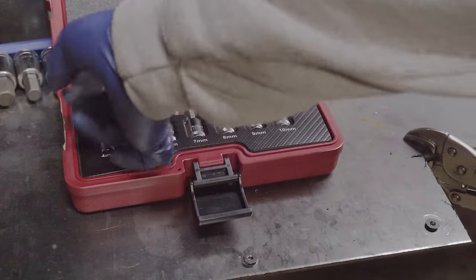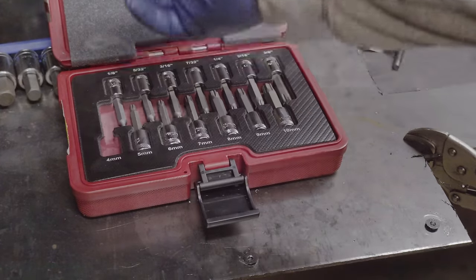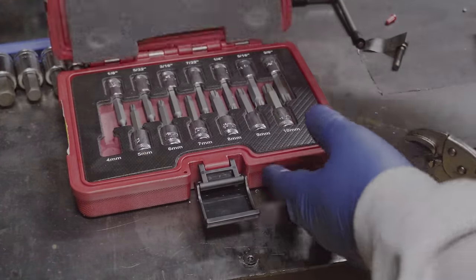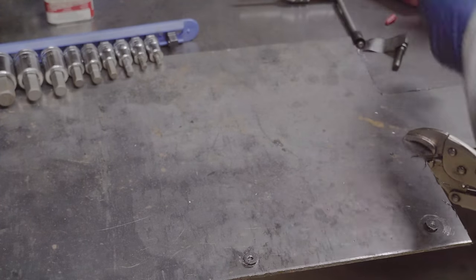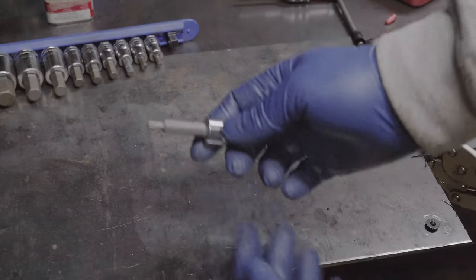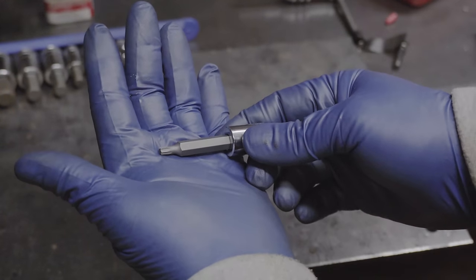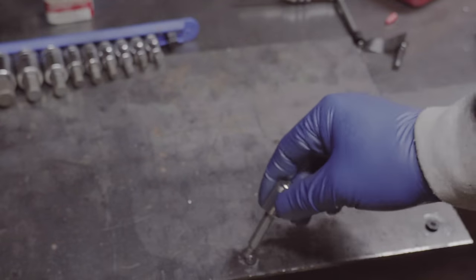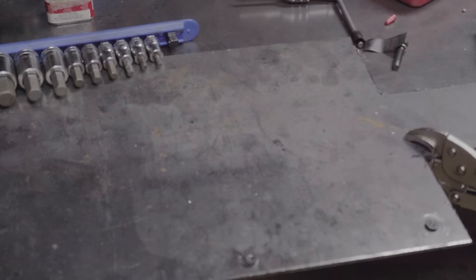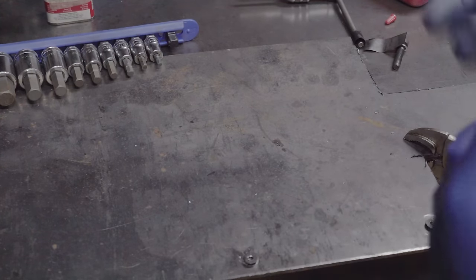So we know it's a 4mm. If you don't know the size, you obviously will just pick until you find a size that works. As you can see, these have teeth that will grip the rounded edges, similar to a bolt extractor.